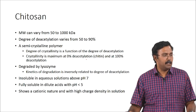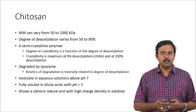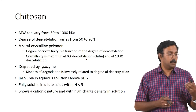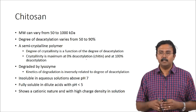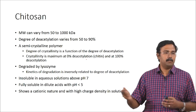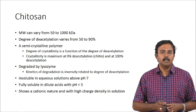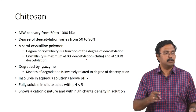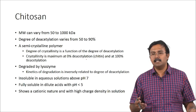Chitosan is a biodegradable material because it gets degraded by lysozyme. Lysozyme basically cleaves the glycosidic bonds and degrades the chitosan. The kinetics is inversely related to the degree of deacetylation — higher the degree of deacetylation, lower will be the degradability. It is insoluble in aqueous solutions above pH 7 and is fully soluble in dilute acids with pH less than 5. You can also play around with temperature and solubility conditions to dissolve it even around neutral pH. It shows a cationic nature and has a high charge density in solution.